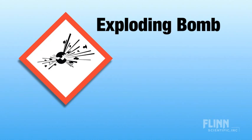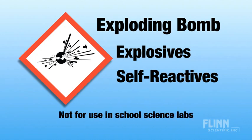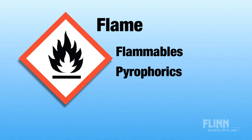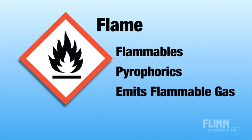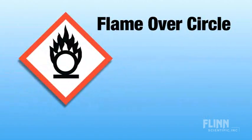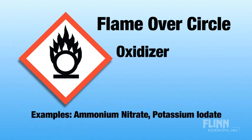An exploding bomb pictogram is used for explosives or self-reactive substances. You should not have any chemicals requiring this pictogram on your school science shelves. A flame pictogram is used for flammable or pyrophoric materials, or those that will generate a flammable gas upon reaction with water. Examples of flammable materials requiring this pictogram are any of the alcohols — ethyl and methyl, isopropyl alcohol — acetone, and also sodium and potassium metal. The third pictogram has an O underneath that flame — that stands for an oxidizer, which is anything that adds oxygen to a flame. Familiar oxidizers include ammonium nitrate and potassium iodate.